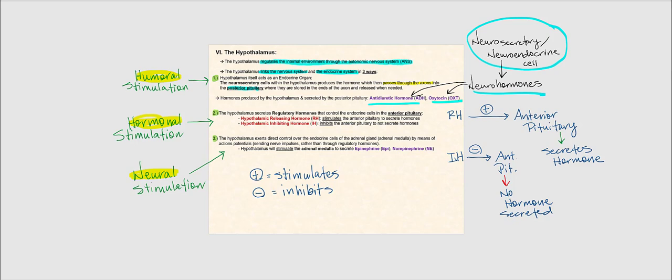Oxytocin's target organs are breast tissue and the uterus. The second way the hypothalamus links the nervous system and the endocrine system is through hormonal stimulation. It does so by secreting another set of neurohormones called regulatory hormones, which control the endocrine cells found in the anterior pituitary.